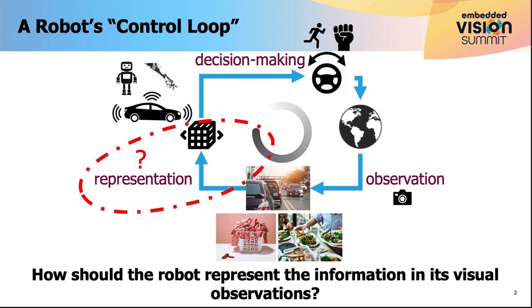So how should the robot take this raw visual observation, such as pictures of the road or of the pile of laundry or of the kitchen countertop, and then condense that into some kind of vector representation that can then inform future decision-making?